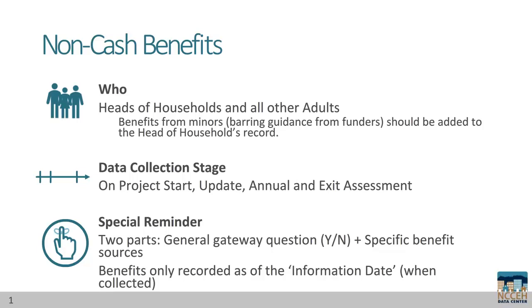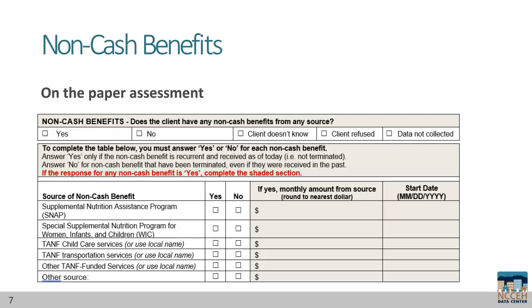Benefits are only recorded as of the collection or information date. We are collecting a timeline for the client's non-cash benefits. Anticipation of benefits or having received them in the past should not be recorded here. On the paper assessment, this looks a lot like income — there's a gateway question first and then specific sources. Make sure you mark yes or no on each possible source.